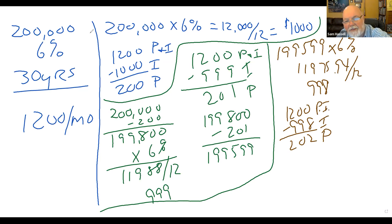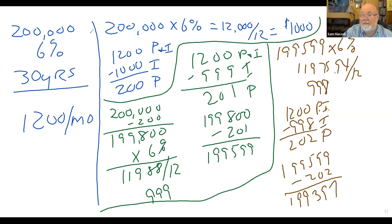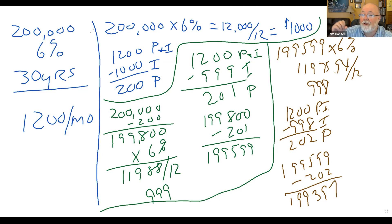Now I have a new number: $199,599 minus $202. So after I've made three payments, I owe $199,397. If we had enough time, we could work out all 360 payments exactly this way, and at the end of those 360 payments, we would pay very little interest and a whole lot of principal — and it would work out to zero. That's exactly how your mortgage works.